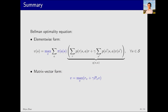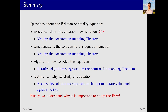This concludes all the content for this lecture. Let's briefly summarize. First, we discussed the Bellman optimality equation, which has two expressions: one in element-wise form and the other in matrix-vector form. Does the Bellman optimality equation have solutions? We know for sure that a solution exists and is unique, according to the contraction mapping theorem. It is important to note that the solution for the optimal state value is unique. However, the optimal policy that corresponds to this optimal state value may not be unique. How to solve this equation? We have presented an iterative algorithm suggested by the contraction mapping theorem. The solution to the Bellman optimality equation, including the state value and the policy, is optimal. That is all for this lecture.